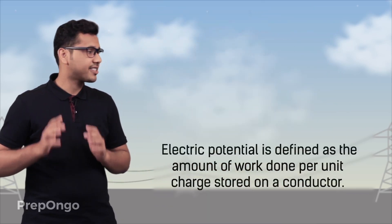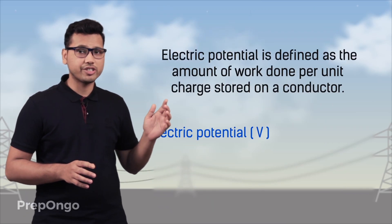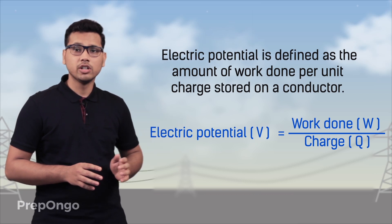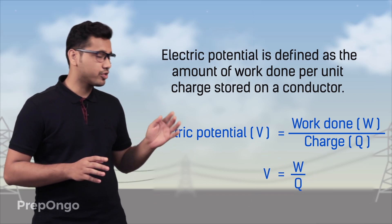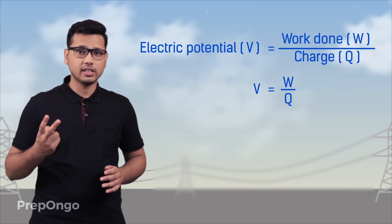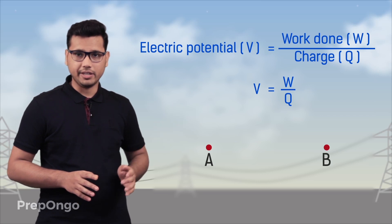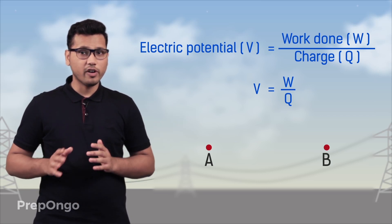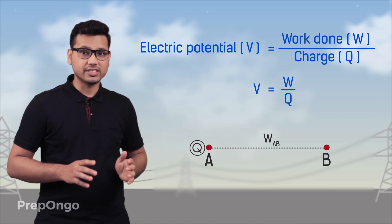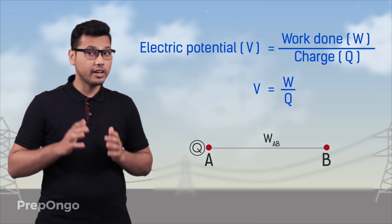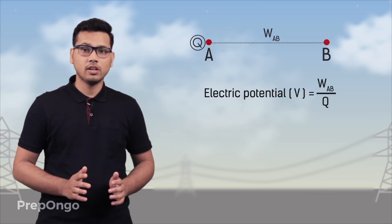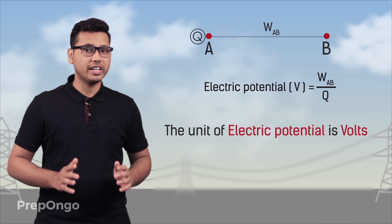We define electric potential as the amount of work done per unit charge accumulated on the plate. So electric potential V equals work done W upon charge accumulated Q, meaning V = W/Q. Now if we have to calculate electric potential for two points, say A and B, and the work done to bring charge Q from B to A is W_AB, then the electric potential V equals W_AB divided by Q. The unit of electric potential is volts.